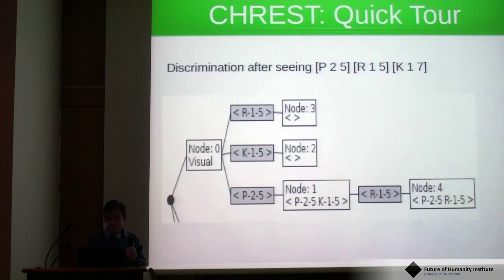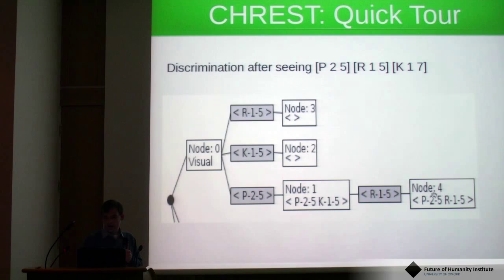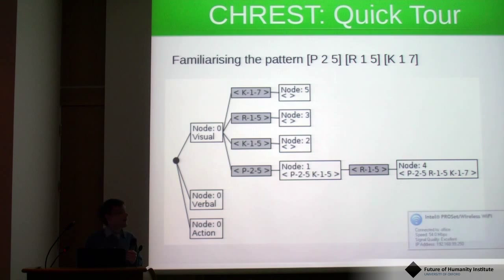Given that network, if we were now to see the pattern 1-5, it would be sorted down to this node. If it disagrees with that pattern, we would learn some more chunks by discrimination. If we were to see the pattern again, we can learn by familiarization and extend the amount of information in that node. So the network is built gradually by discrimination to add more nodes and by familiarization to extend the amount of information.